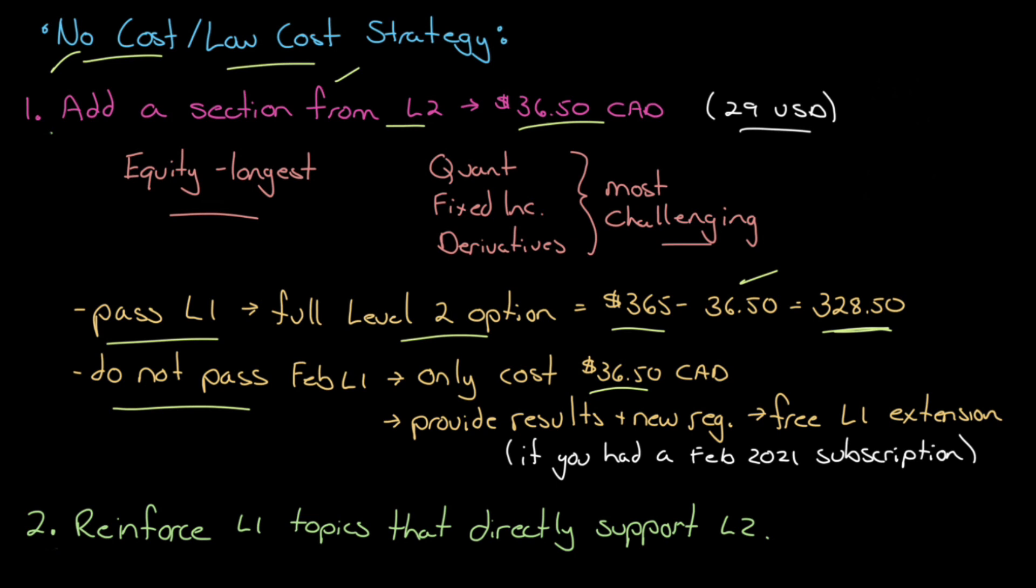Because of our one fee to pass policy now, as of 2021, all our pricing at each level is one fee to pass, one fee to pass that level. So if you buy a Level 1 subscription, you only pay for that subscription once. If you do not pass, we carry you to your next exam. There is no cost on you for doing that until you pass that level. So you don't pass. You're only out $36.50, but you provide your results and your new registration date, and we will extend your Level 1 access to that date. There is no cost for us to extend access to that date.